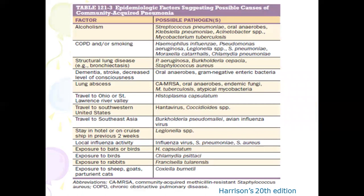Moving on to epidemiological factors that suggest the possible cause of community-acquired pneumonia, to guide empirical antibiotic treatment. For a patient with a history of alcohol abuse, it could be due to Streptococcus pneumoniae, oral anaerobes, or Klebsiella pneumoniae. A patient with COPD or a history of smoking — the most common organism is Haemophilus influenzae. In patients with structural lung disease like bronchiectasis, it could be gram-positive or gram-negative organisms such as Staphylococcus aureus or Pseudomonas aeruginosa. In patients with dementia, stroke, or decreased level of consciousness, decreased gag reflex leads to gross aspiration of oral anaerobes causing anaerobic pneumonia.